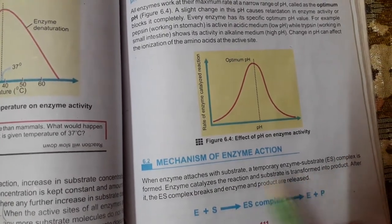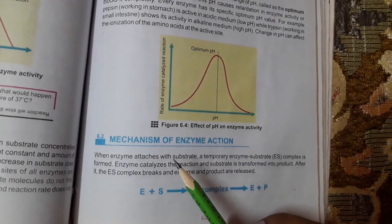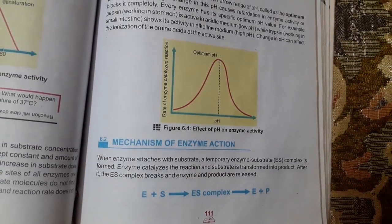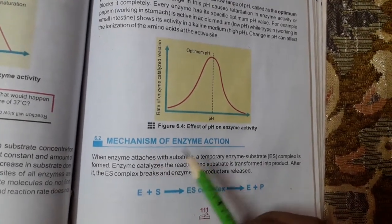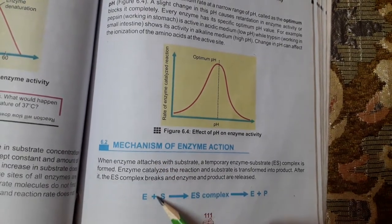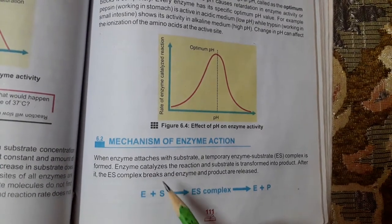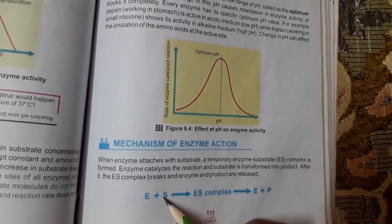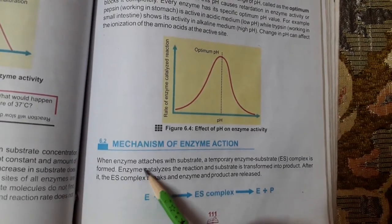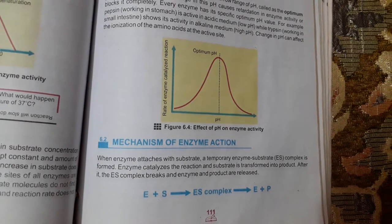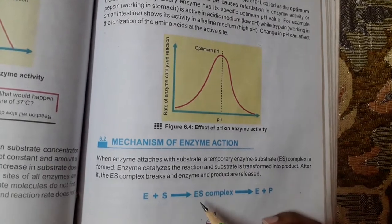The mechanism of enzyme action means how in any reaction an enzyme helps to speed up the reaction — how does it work, how does it proceed the reaction? When an enzyme will speed up and act as a catalyst, it will bind with the reactant or substrate. When an enzyme attaches with a substrate, a temporary complex is formed, known as the ES complex or enzyme substrate complex.